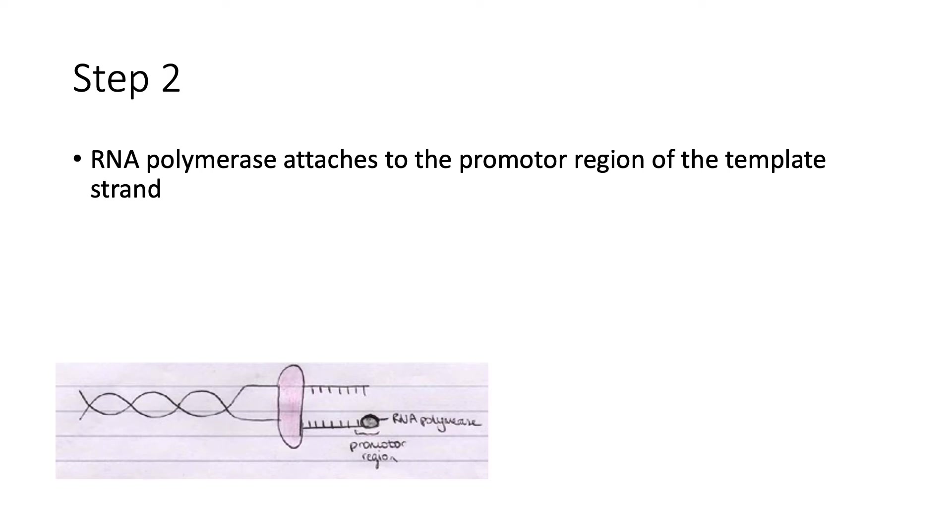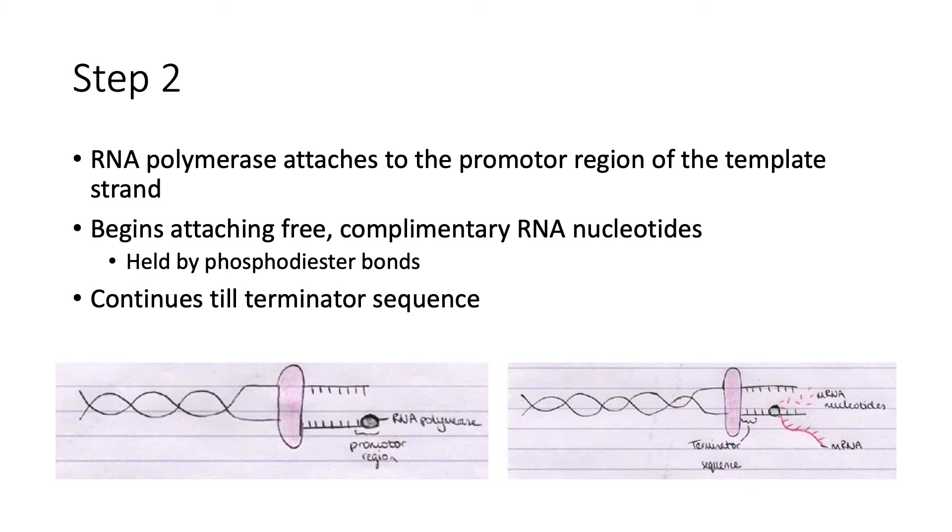In step two, RNA polymerase attaches to the promoter region of the template strand at the beginning. It begins attaching free complementary RNA nucleotides like the ones mentioned in the previous slide, and they're held together by phosphodiester bonds formed in a condensation reaction.